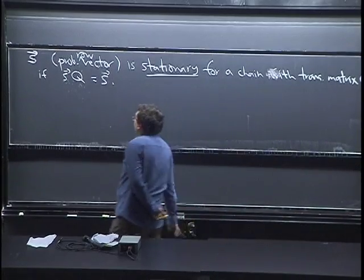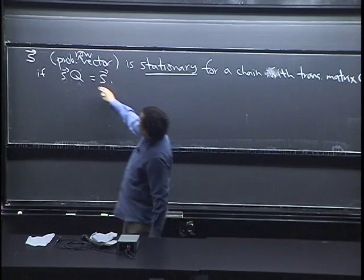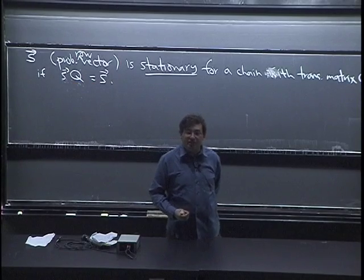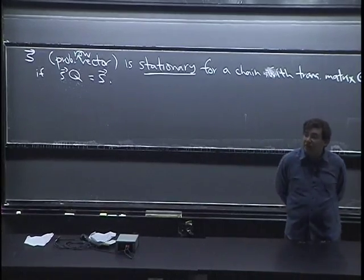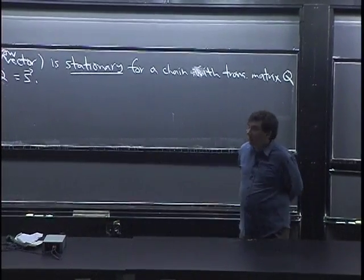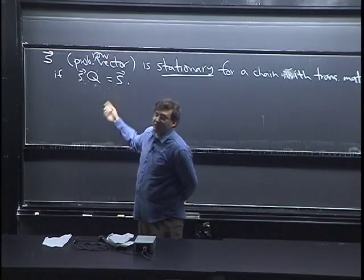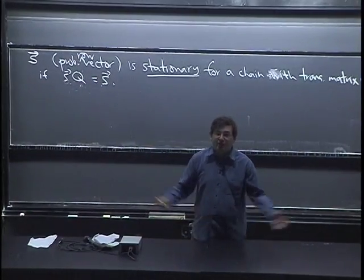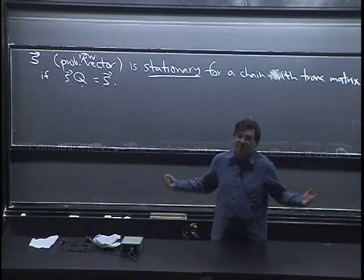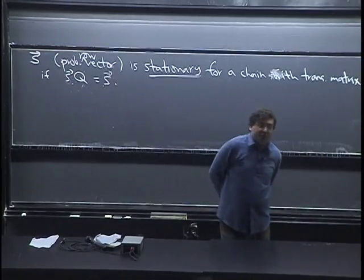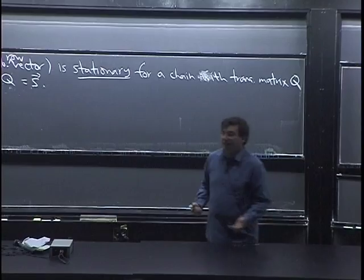For those who've done eigenvalues and eigenvectors, you can interpret SQ = S as an eigenvalue–eigenvector equation. In general, if there are a large number of states, this may be computationally very intensive even with a computer. But in principle, all you have to do to solve for a stationary distribution is solve this system of linear equations — it's written in matrix form but you can just do Gaussian elimination or eliminate variables one by one and solve the system.